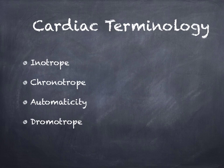I want to ensure we're all on the same page with some basic cardiac terminology regarding anti-dysrhythmic medications. The first term is inotrope — inotropy refers to the strength or force of contraction of the heart. A positive inotropic drug enhances contractility, while a negative inotropic drug decreases the contractility of the heart.